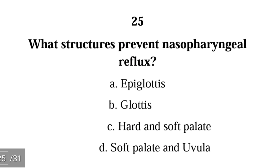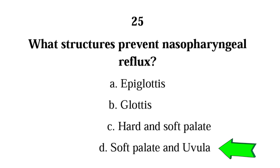Number 25. What structures prevent nasopharyngeal reflux? A. epiglottis, B. glottis, C. hard and soft palate, D. soft palate and uvula. The correct answer is D. The soft palate and uvula are the structures that prevent food from the oropharynx from moving upward towards the nasopharynx.